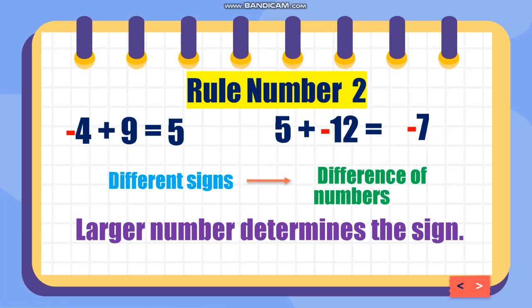Rule number two: different signs — take the difference of the numbers, meaning subtract. For example, 9 plus negative 4: 9 minus 4 is 5, and the sign of the larger number is positive (9), so the answer is positive 5. Another: positive 5 plus negative 12 — different signs, subtract: 12 minus 5 is 7, and the larger number is 12 which is negative, so the answer is negative 7. Always remember: different signs, get the difference, and the larger number determines the sign.